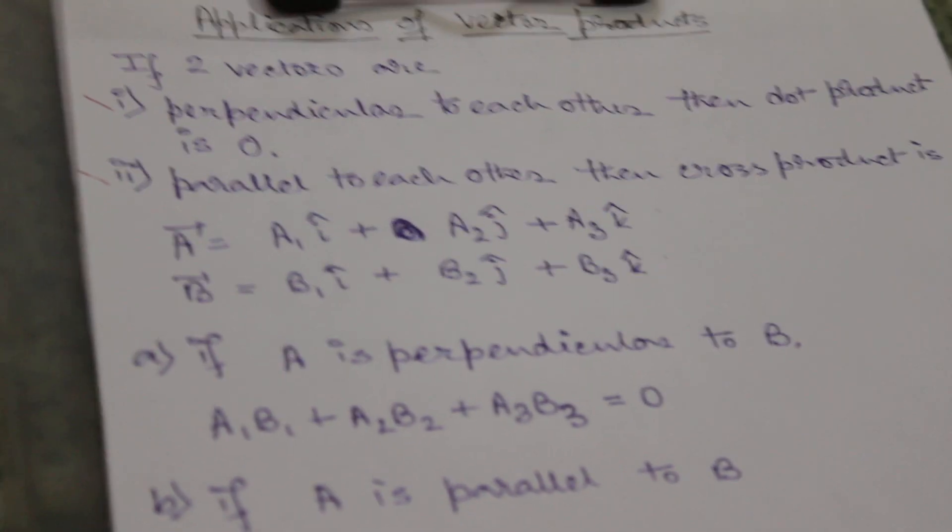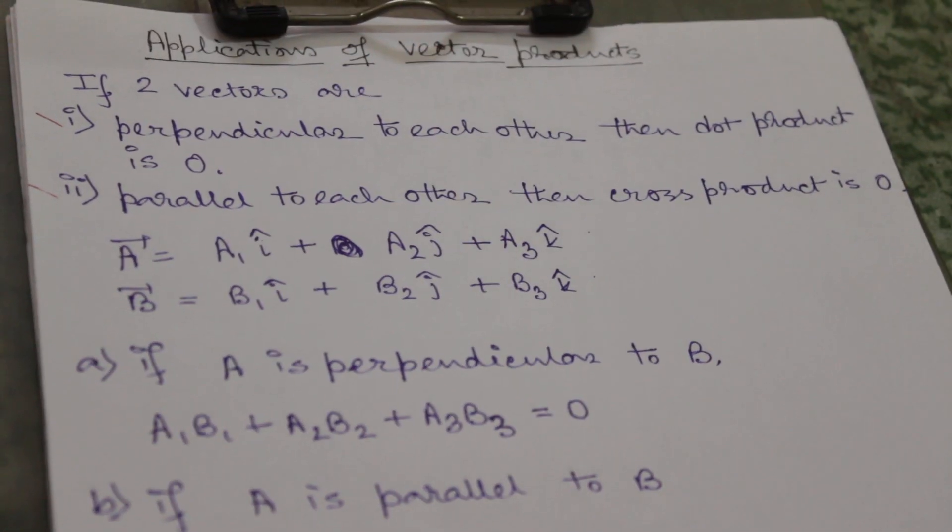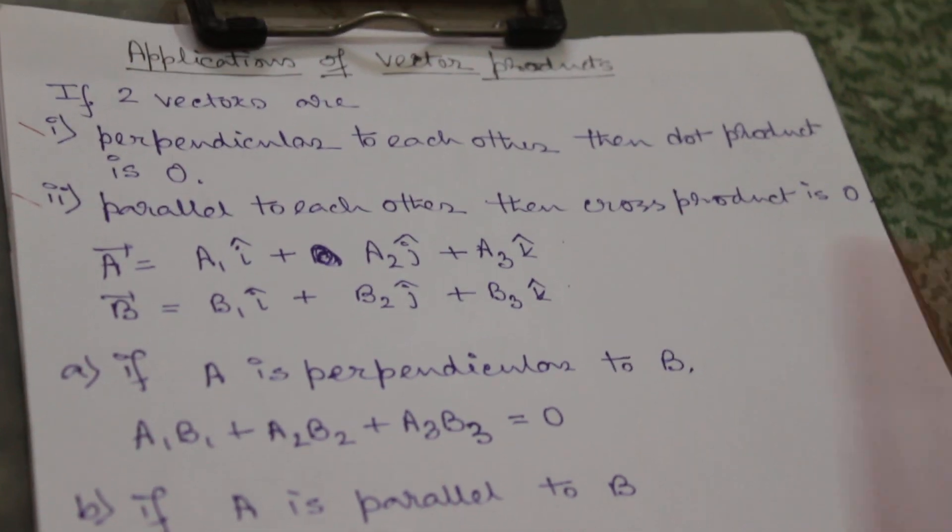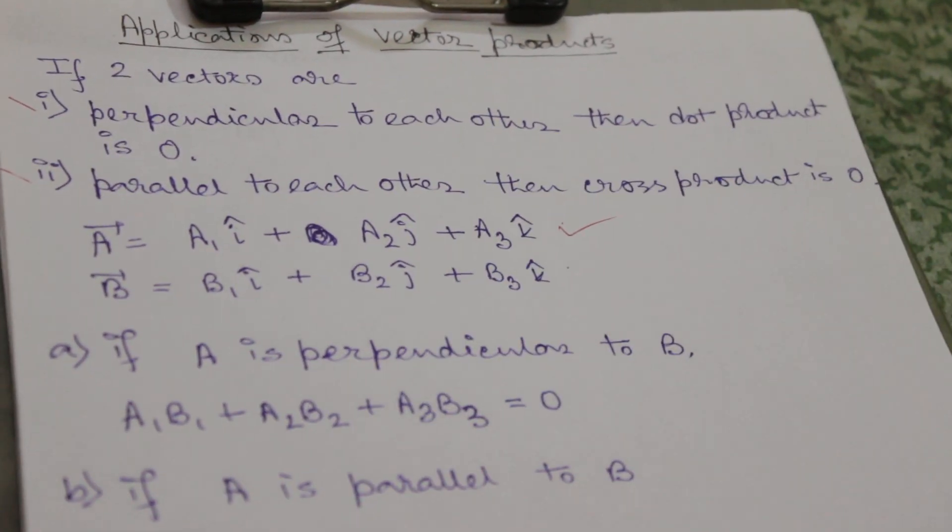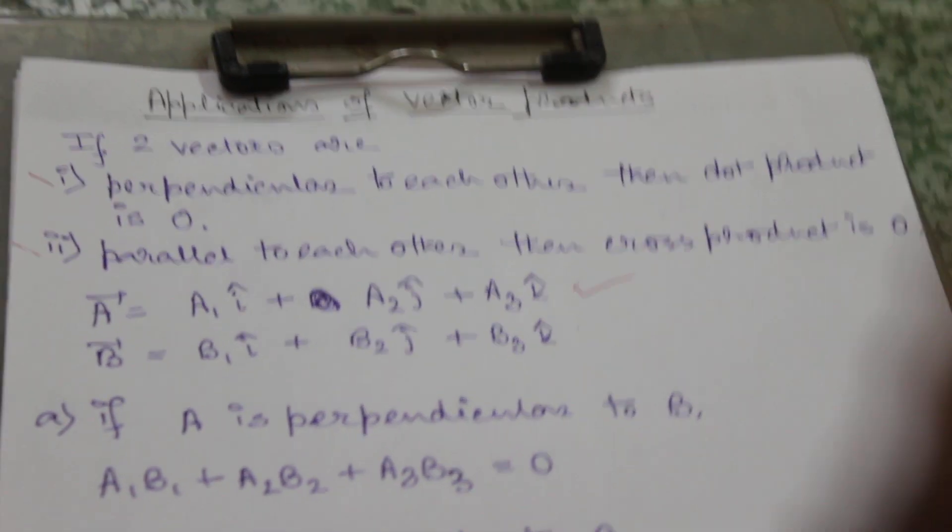Let there are two vectors A bar and B bar. A bar is a1 i cap plus a2 j cap plus a3 k cap, and B is b1 i cap plus b2 j cap plus b3 k cap.